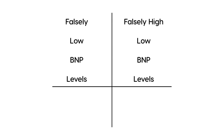In certain patients, the BNP value can be falsely low or falsely high. For example, in obese patients, the BNP value can be falsely low. If an obese patient has CHF and you would expect a BNP of 450, instead it might be falsely low at 300. This creates a diagnostic challenge when assessing the patient.